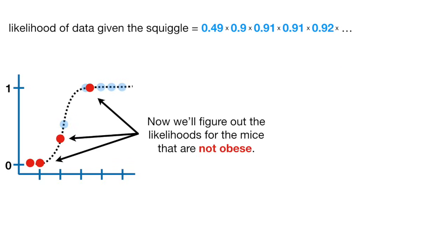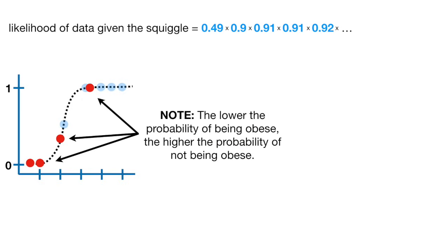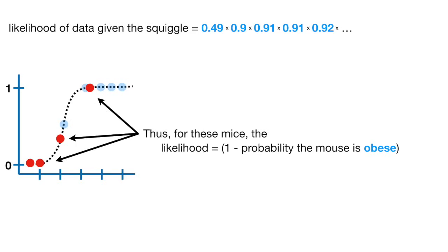Now we'll figure out the likelihoods for the mice that are not obese. Note, the lower the probability of being obese, the higher the probability of not being obese. Thus, for these mice, the likelihood equals 1 minus the probability the mouse is obese.